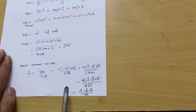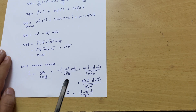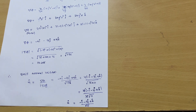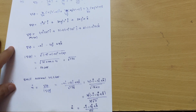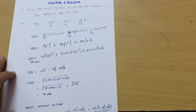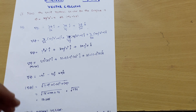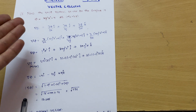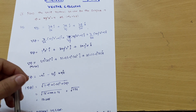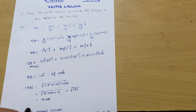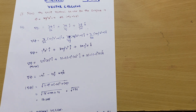This is the answer for the unit normal vector to the given surface phi = x y³ z² − 4. I hope this is clear. Please share this video with all your friends who need it. Thank you.